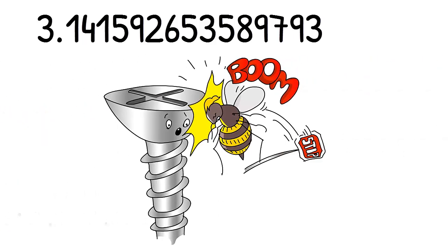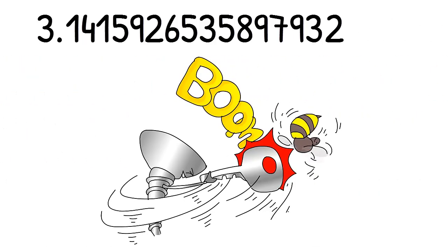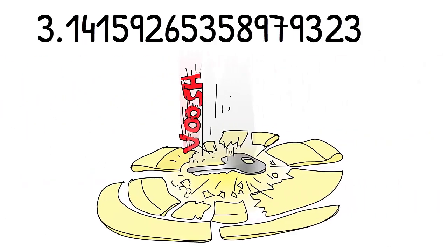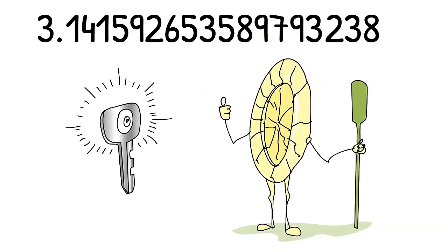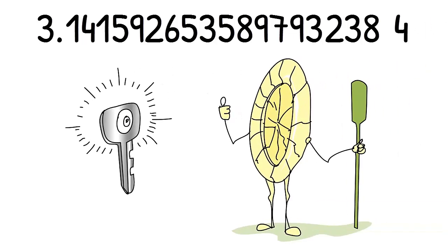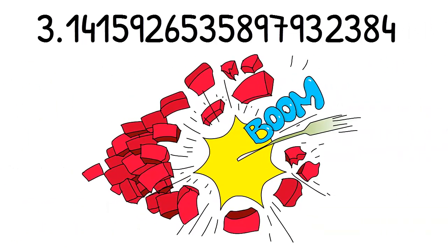It crashes into an enormous screw. The screw hits the bee away with a key. Then the key falls and smashes a plate. That's annoying, so the plate grabs an oar. The oar is thrown into a large pile of bricks. And that's pie to 20 decimals.